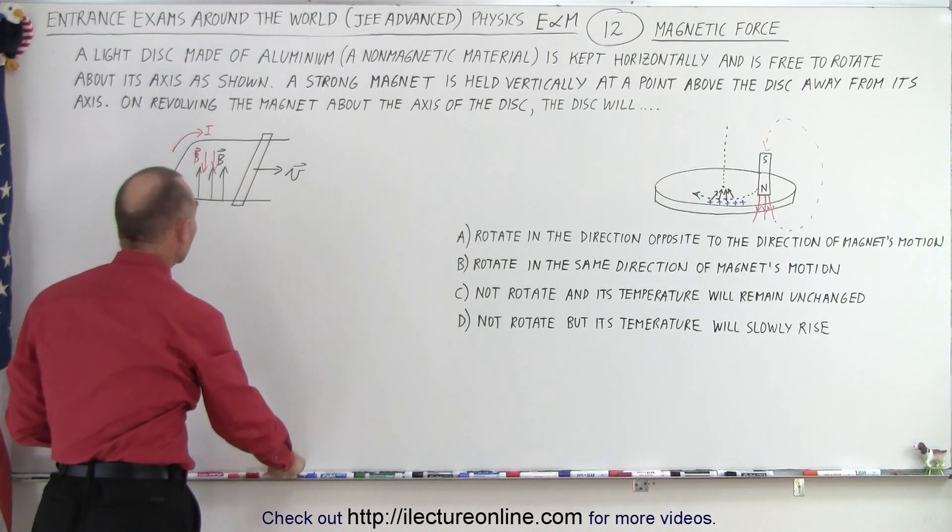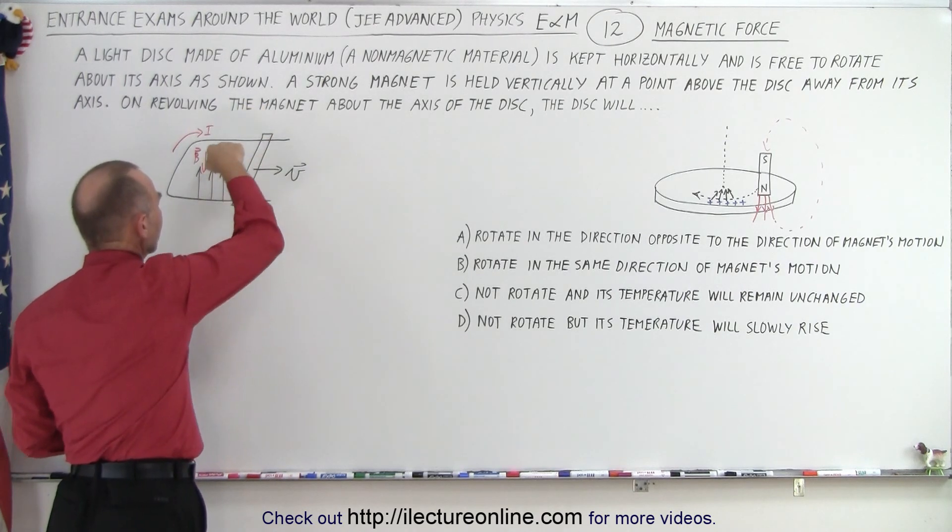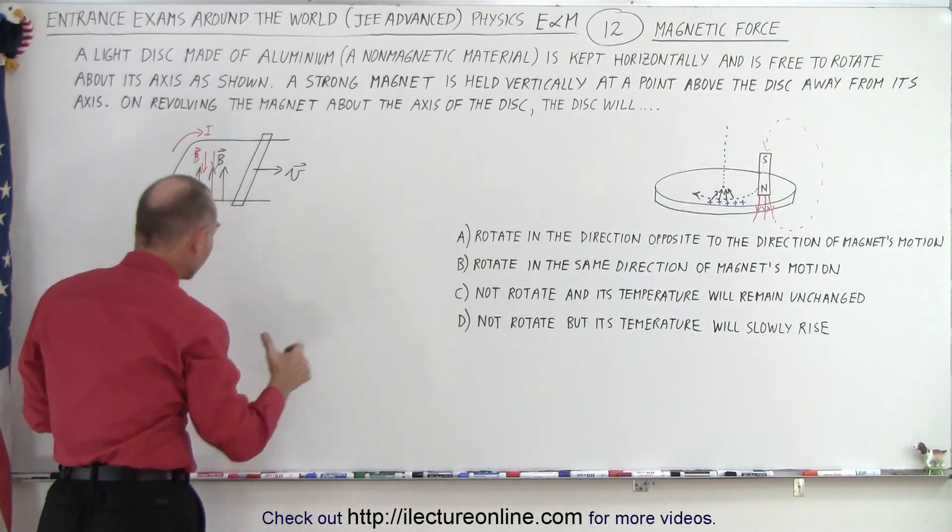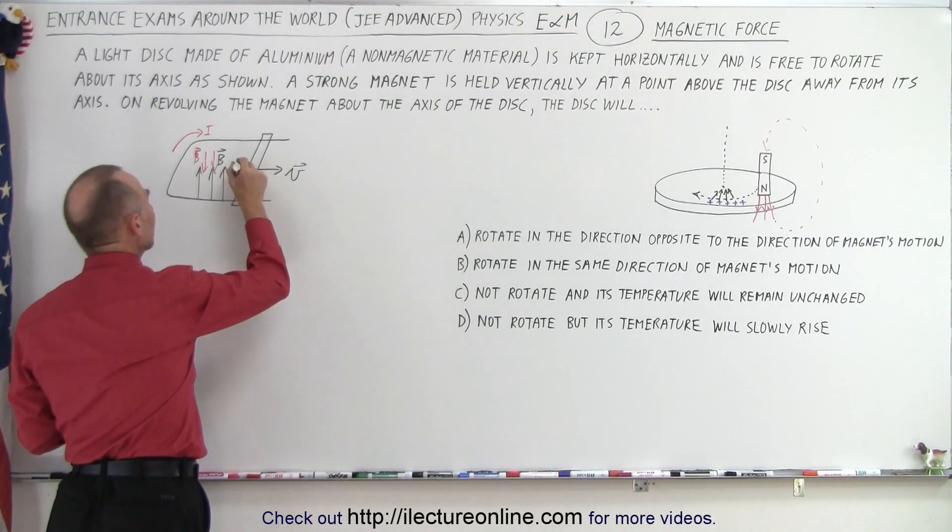And we then also realize that the current going through the bar interfering with the magnetic field will experience a force in this direction so that there will be a force in the opposite direction.